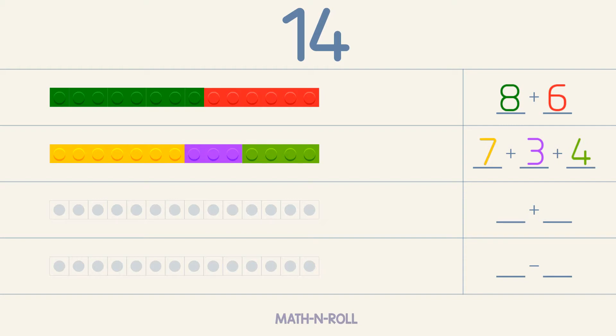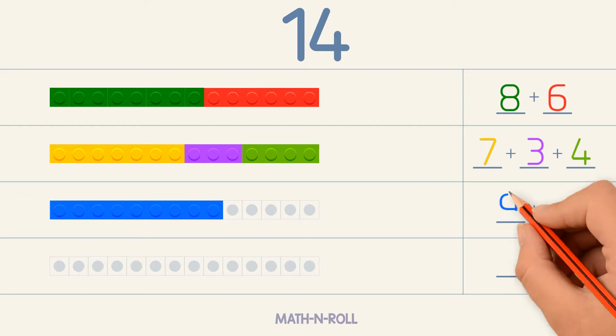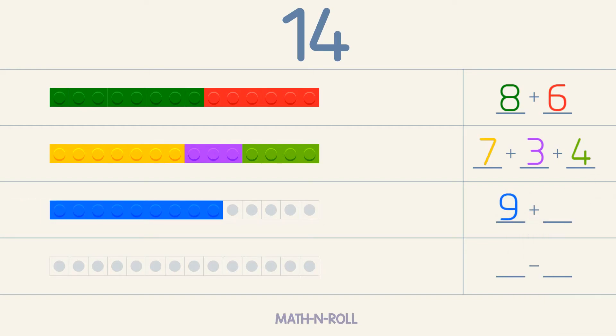Now make 14 using 2 numbers. The first number is 9. To get 14, we need 5 more pieces. So we add 5. 9 plus 5 equals 14.